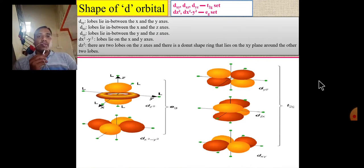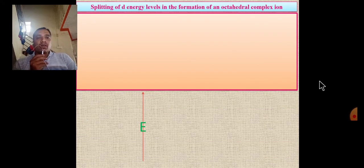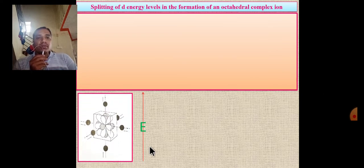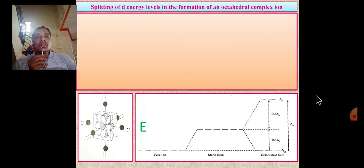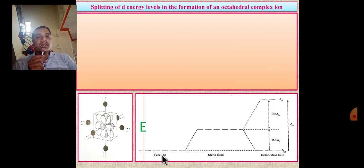In octahedral geometry, there are six ligands placed along the axes. The t2g orbitals lie between the axes and the eg orbitals lie along the axes. In free metal ions, these orbitals are degenerate, but upon interaction with the ligands, the degeneracy is removed and the orbitals split.